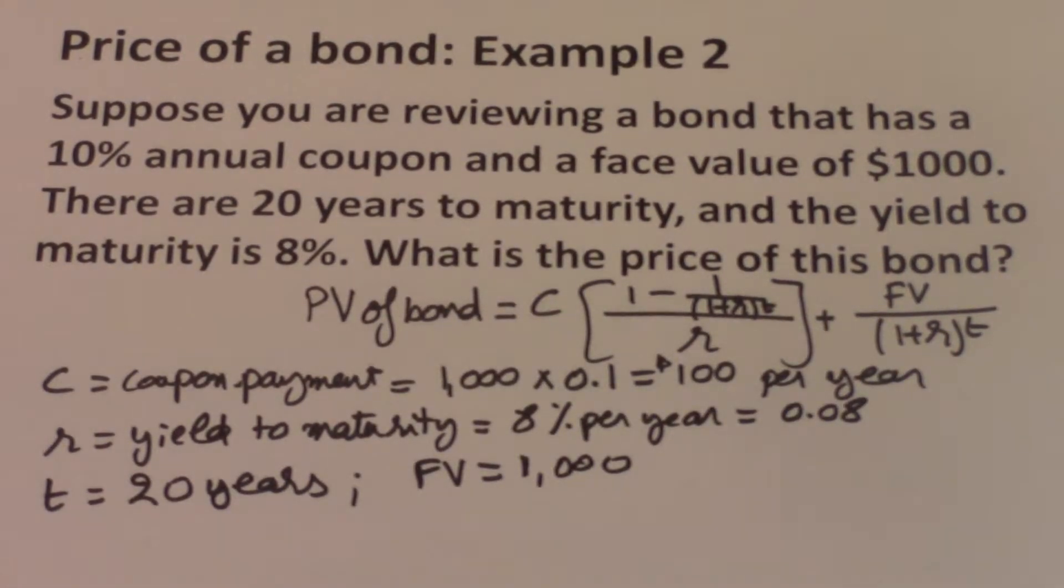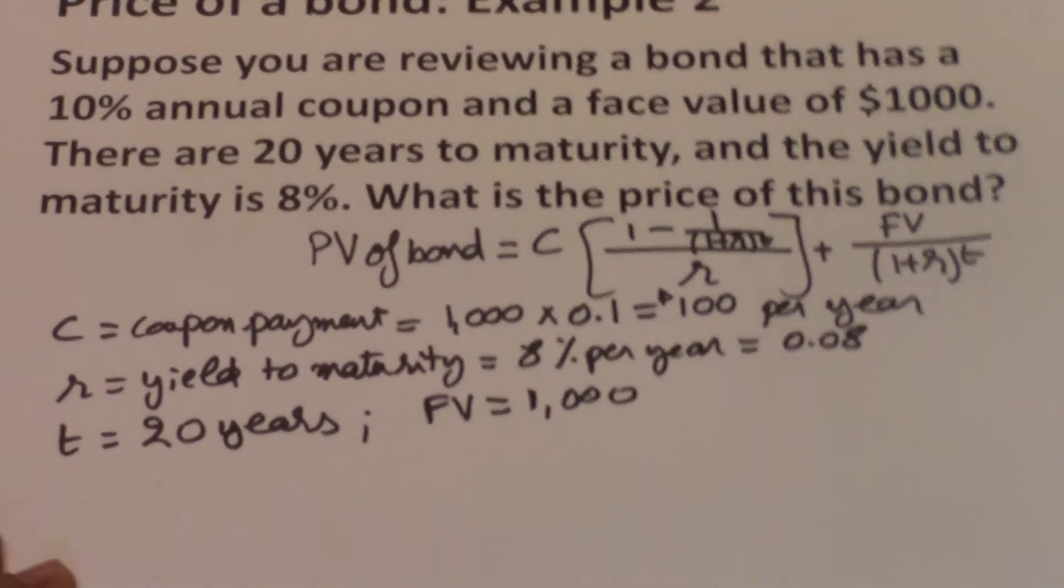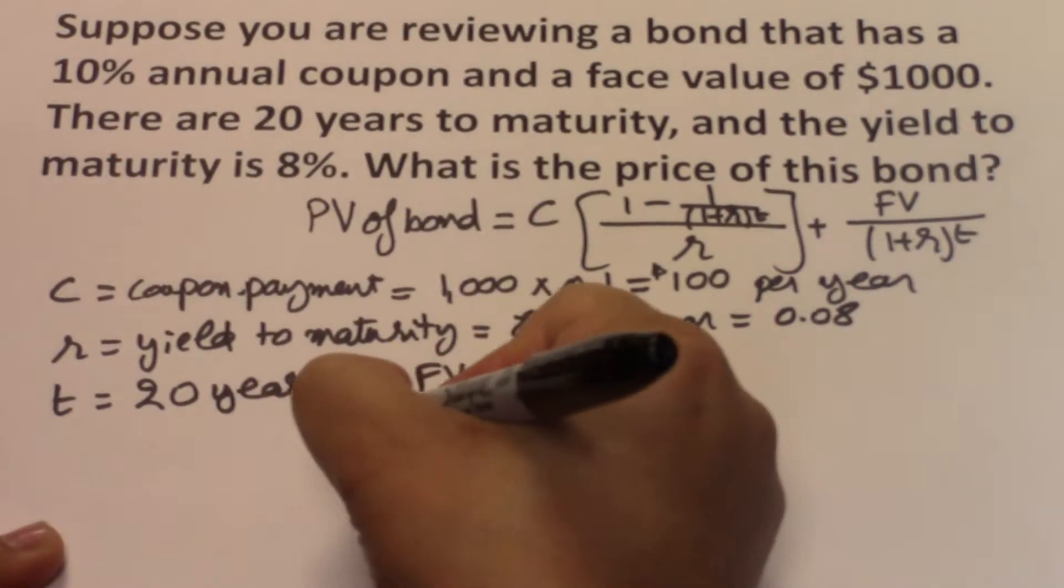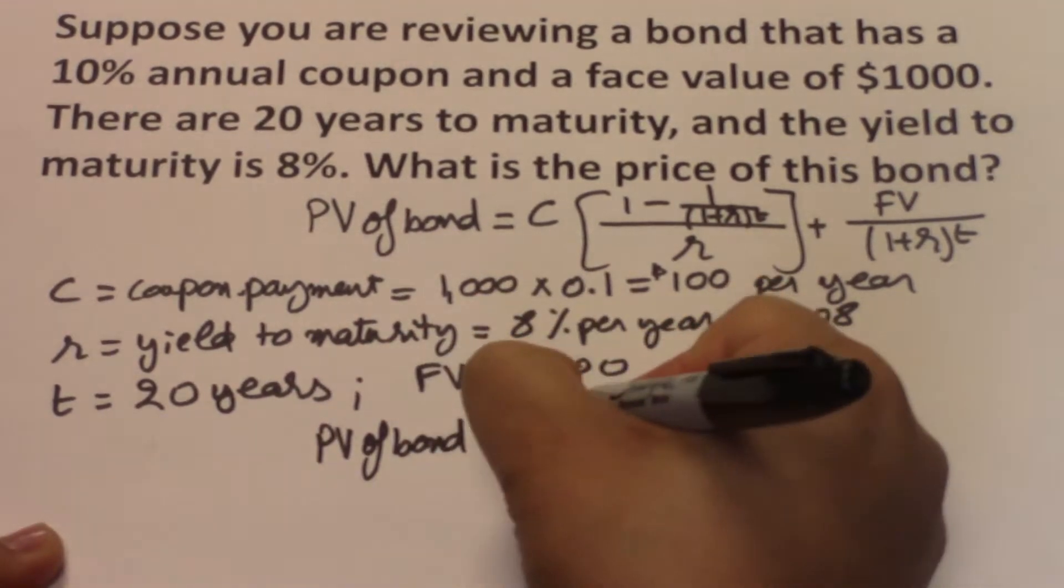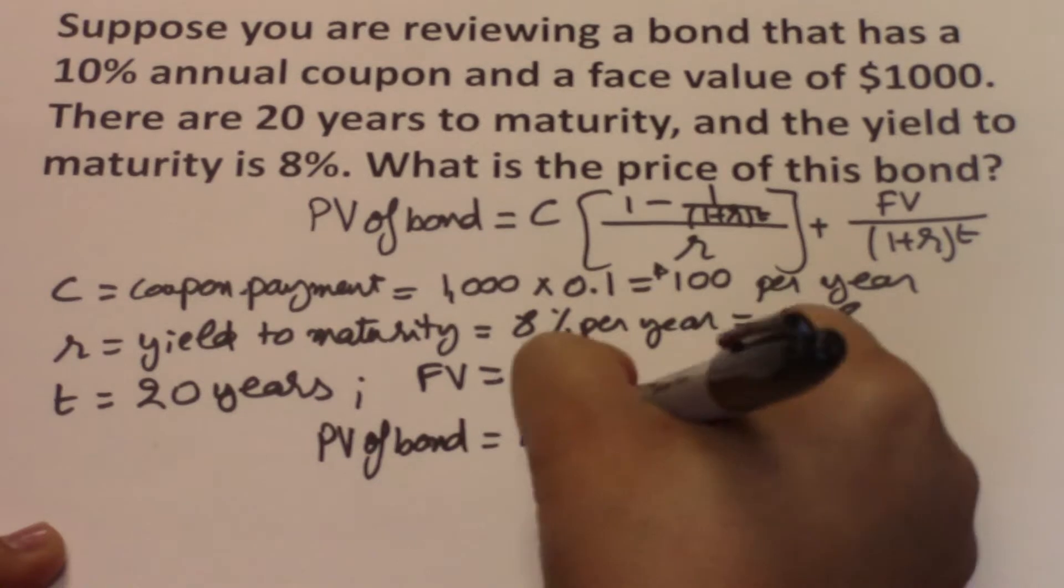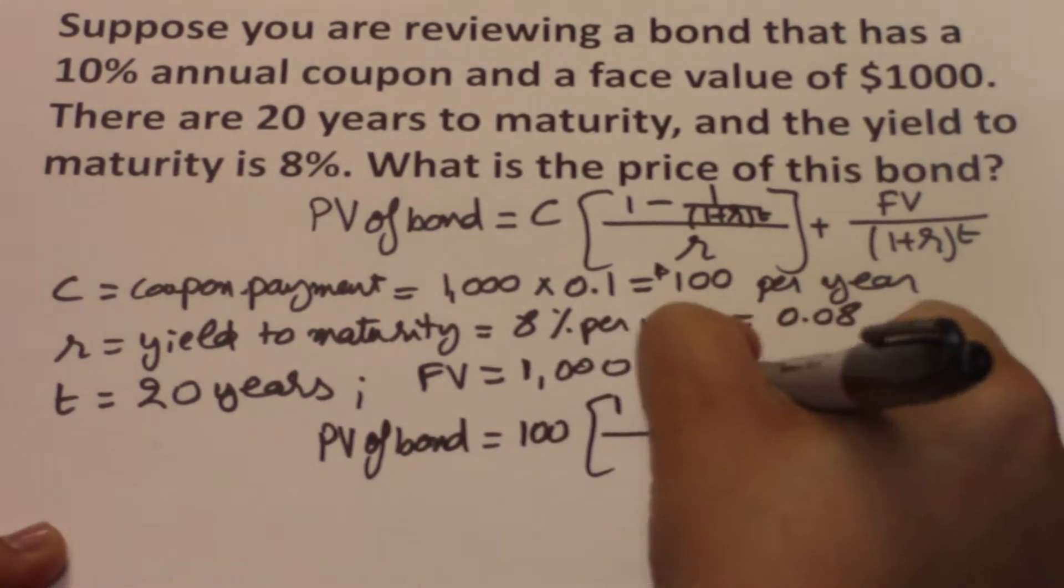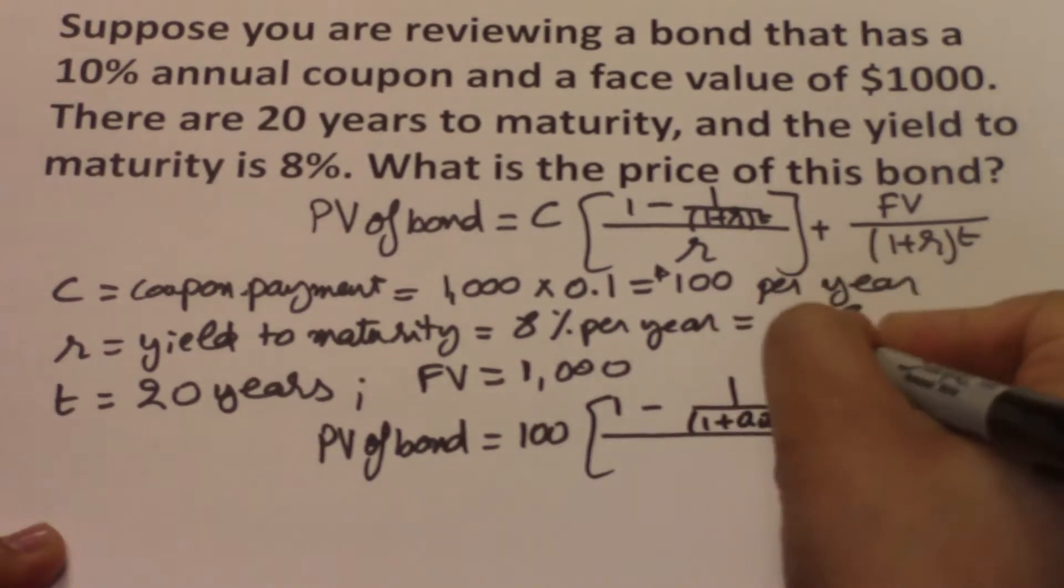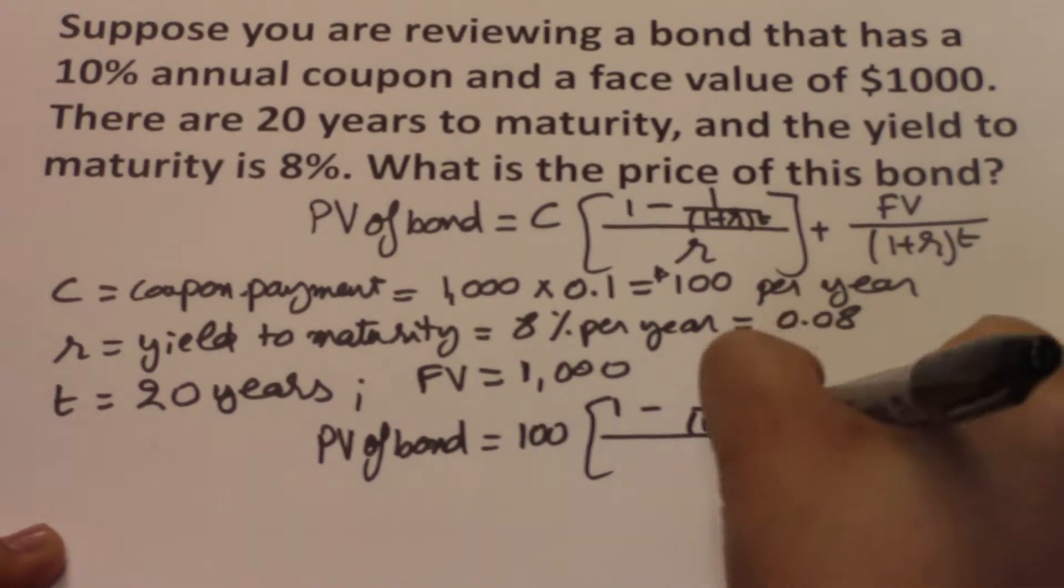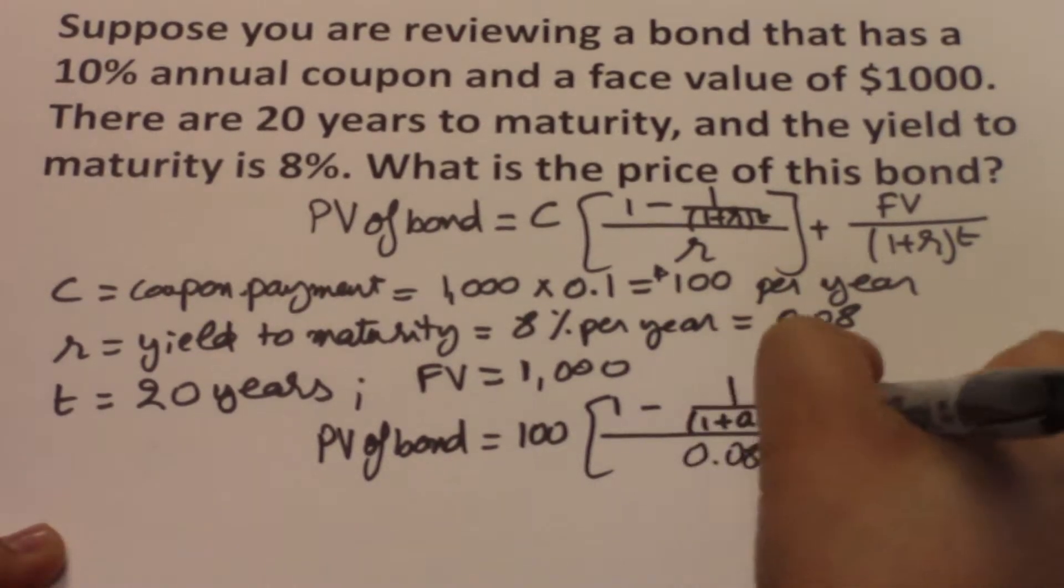So here we have all of our variables. All we need to do is input them into the formula. So the PV of bond equals 100 times 1 minus 1 over (1 plus 0.08) to the power of 20, divided by 0.08.